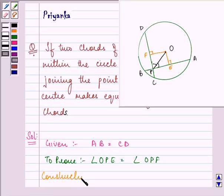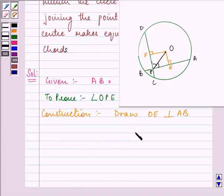the construction I did was, I have drawn OE perpendicular on AB and OF perpendicular on CD and then also I have joined OP. Let us start with our solution.